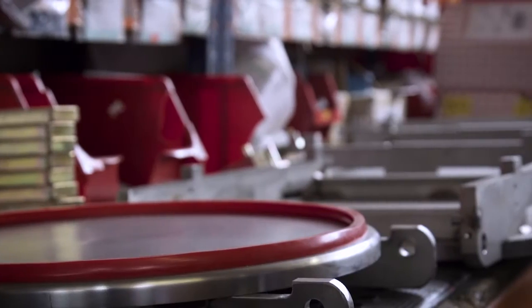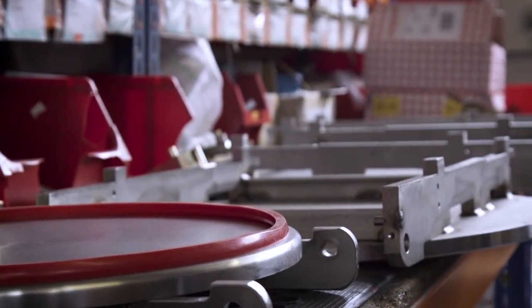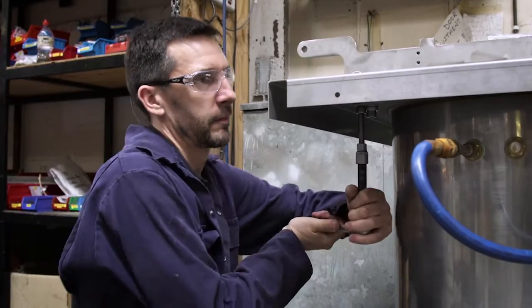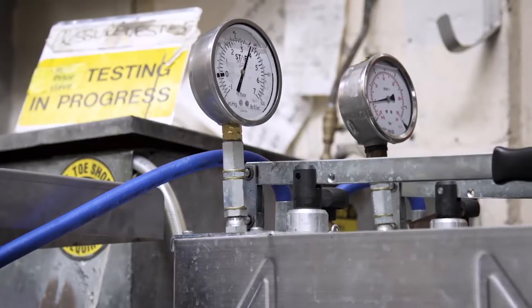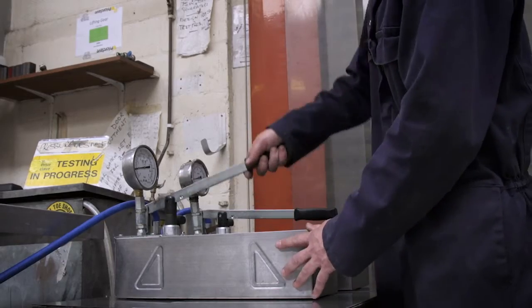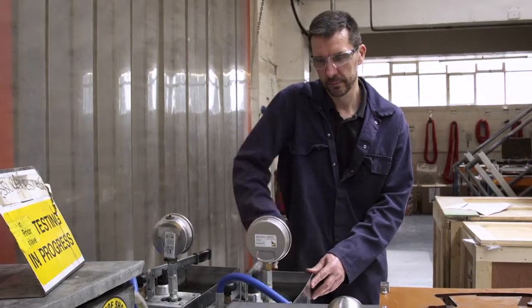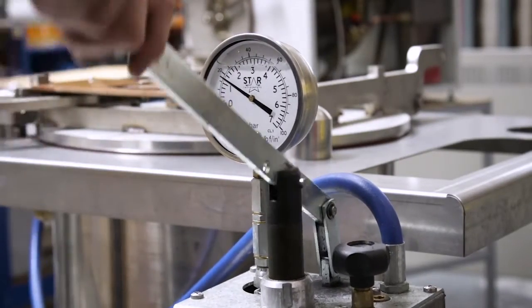In the assembly area, the door and closure fittings are added to the pressure vessel so that it can be made watertight ready for pressure testing. Every pressure vessel is tested under water pressure to one and a half times its maximum design pressure and held for 30 minutes to check the integrity of the welds.